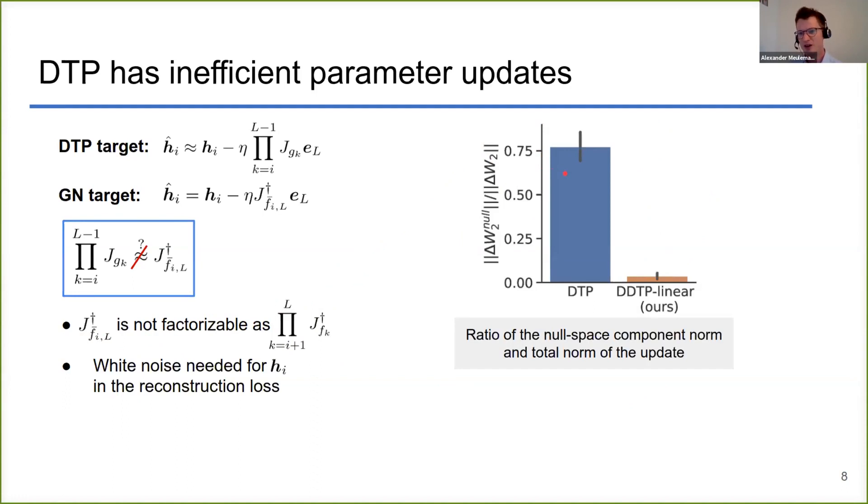The component that lies in the null space of the network cannot influence the output of the network at all, so can be considered quite useless. In this graph we see that on average almost 75 percent of a DTP update lies inside the null space of the network, which makes it quite inefficient. Our new variants that we will introduce later largely solve this problem.